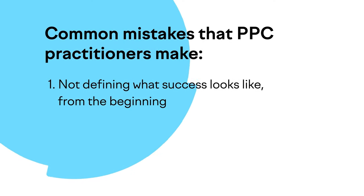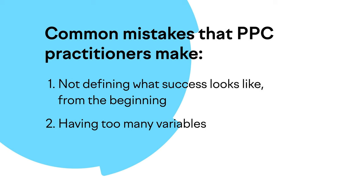Whilst it is easy to get lost in the intricacies of this, you should never lose sight of the core concept: one element will remain the same whilst another will be a variable. If you change too many things at the same time, you cannot confidently assert what is doing well and what isn't. Some of the most common mistakes PPC practitioners make include not defining what success looks like from the beginning. If you don't know why you are doing this or what you are hoping to gain, this will just be expensive in both time and money. You should only measure one variable per test — anytime you exceed this, you start to cast doubt on what will actually perform well.